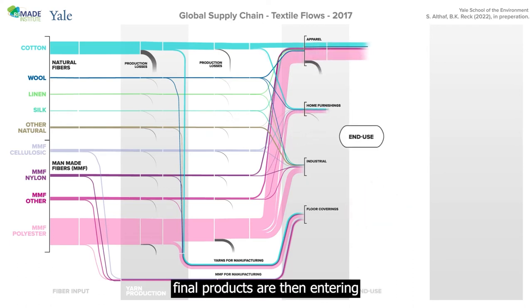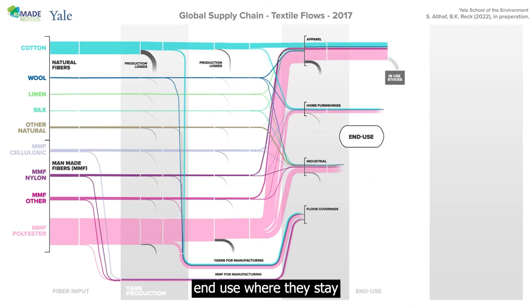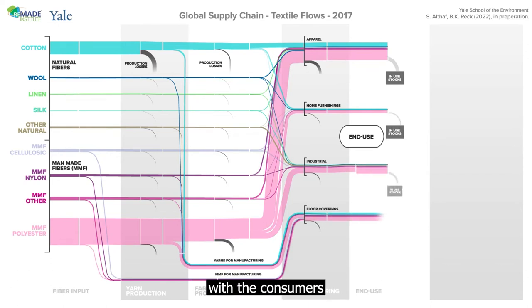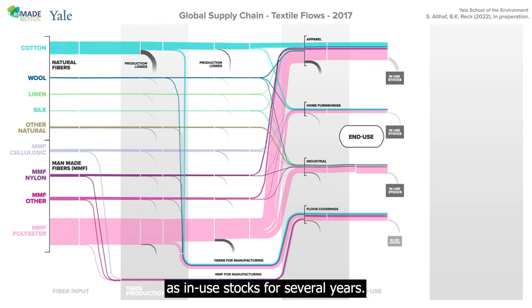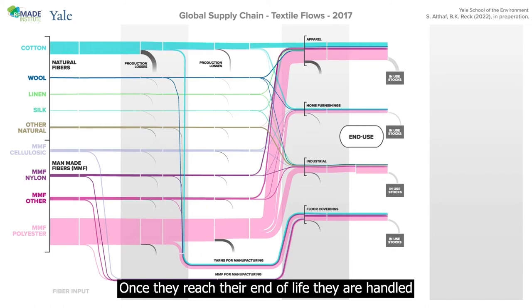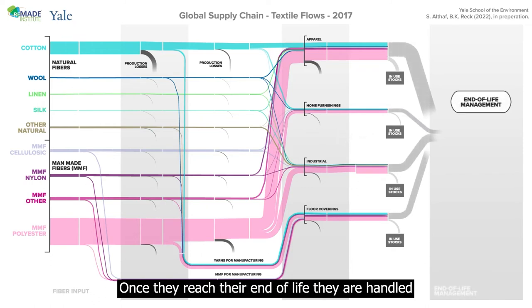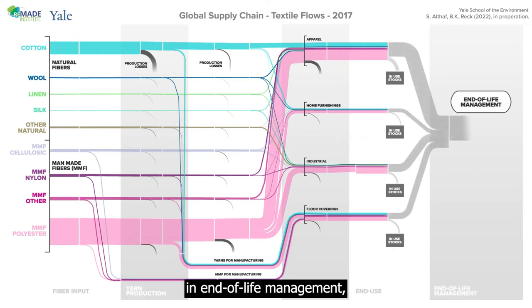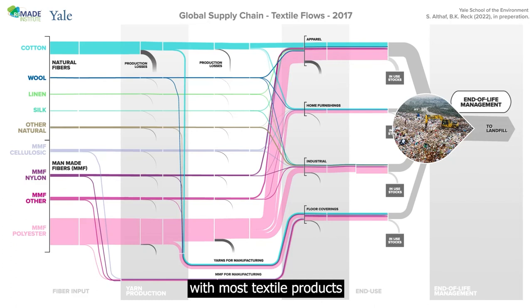The manufactured final products then enter end use, where they stay with consumers as in-use stocks for several years. Once they reach their end of life, they are handled in end of life management, with most textile products ending up in landfills.